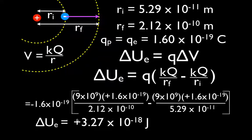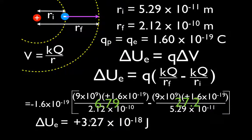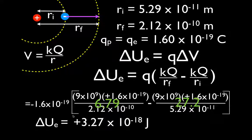This is a positive change. The final potential term works out to about 6.79, and the initial potential term is a little bigger — about 27. When we subtract these two we get a negative number, about minus 20, and we multiply that by the electron charge, which is also negative. A negative times a negative is a positive — it's a positive change in potential energy. This makes sense: we have a positive charge and a negative charge, and we're moving the negative charge away from the positive charge — moving it to a place it doesn't want to be — so it gains positive potential energy.